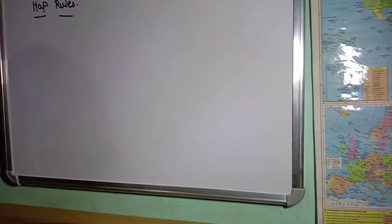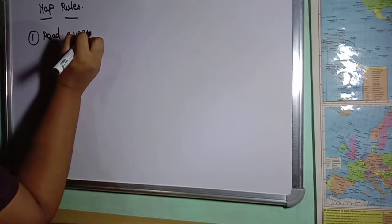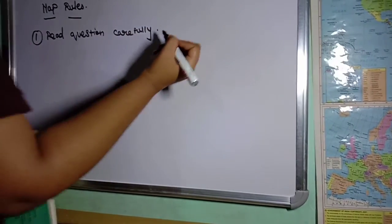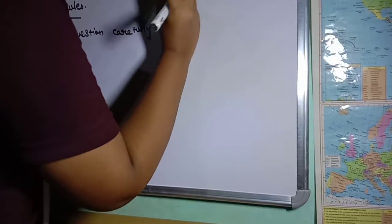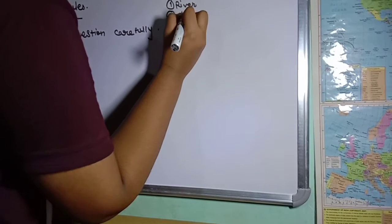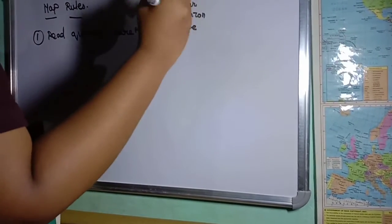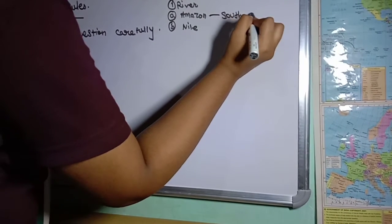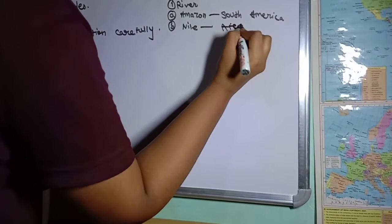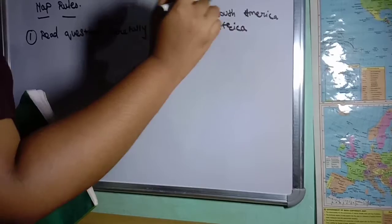First rule: read the question carefully. For example, if in the exam you are given rivers like Amazon and Nile, first you recognize which area they belong to. Amazon is in South America, Nile is in Africa. Learn this. So when these come in the exam, you should remember where they are and mark them properly.